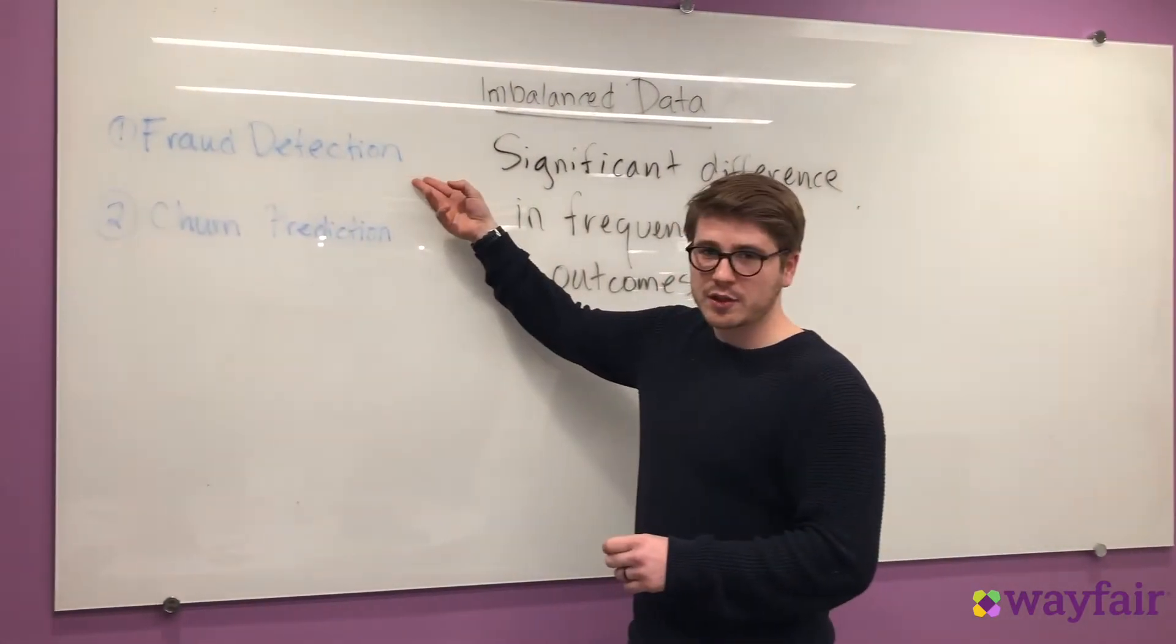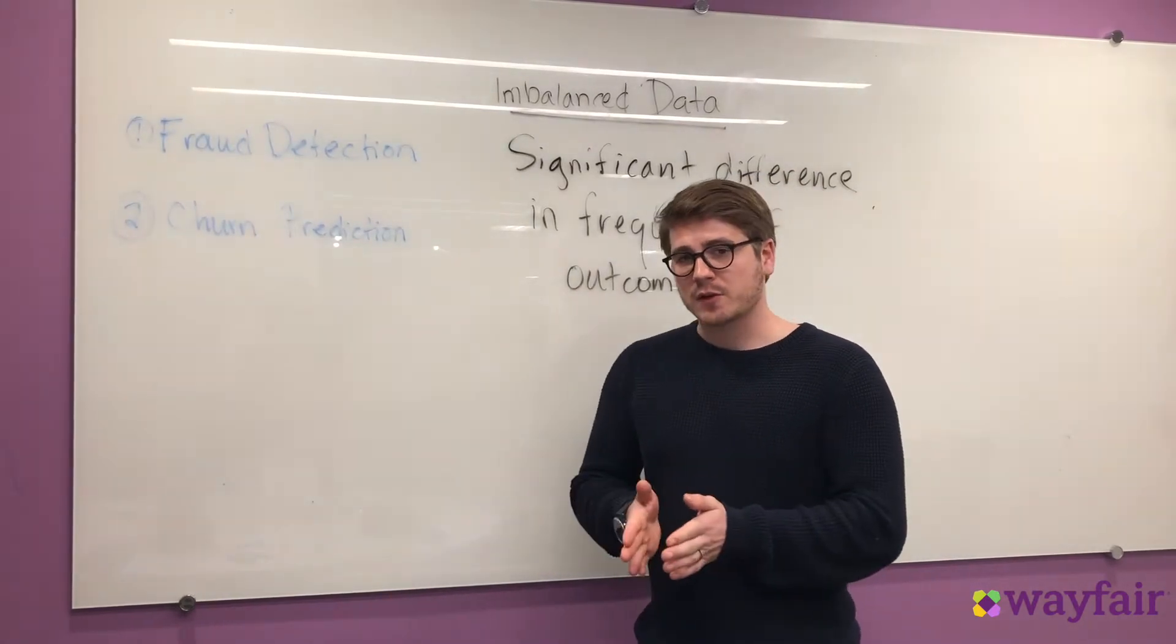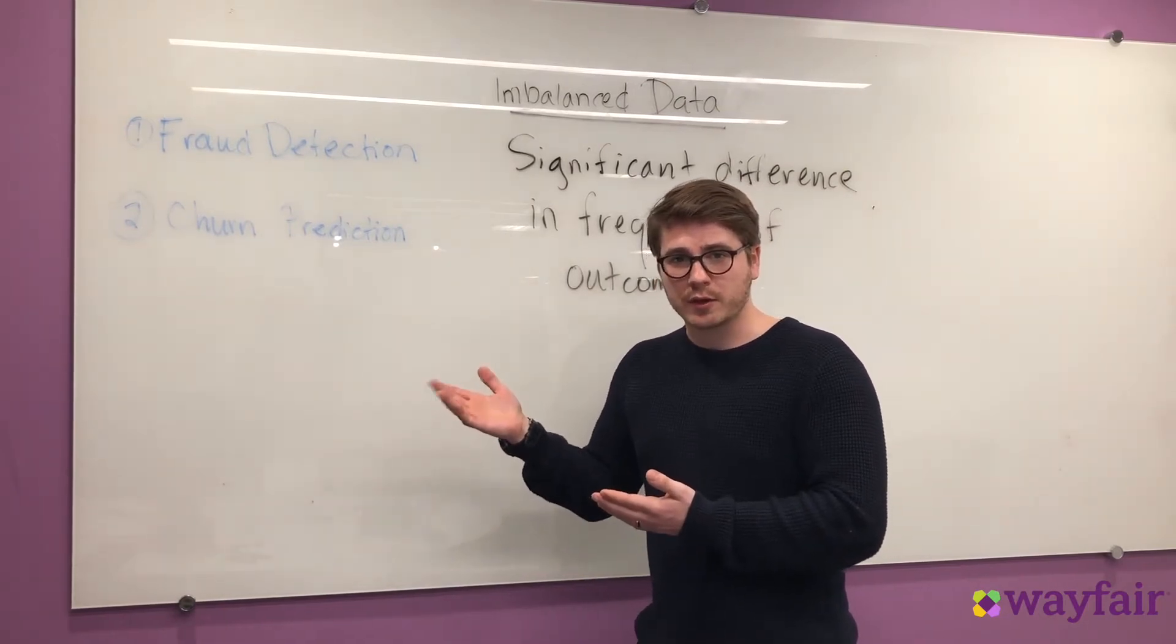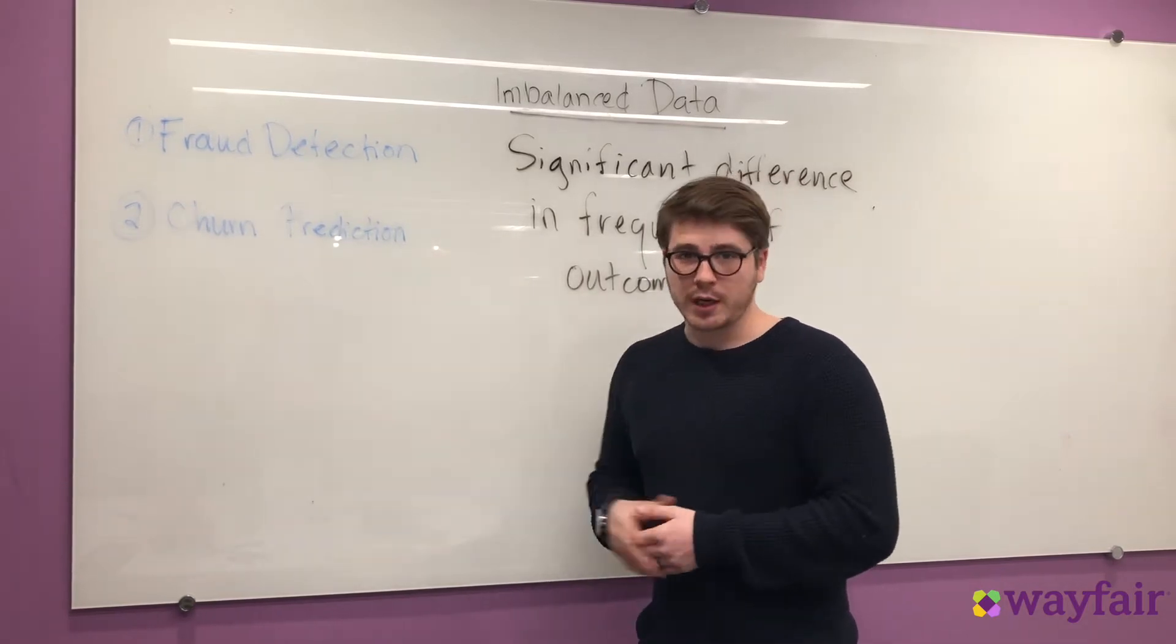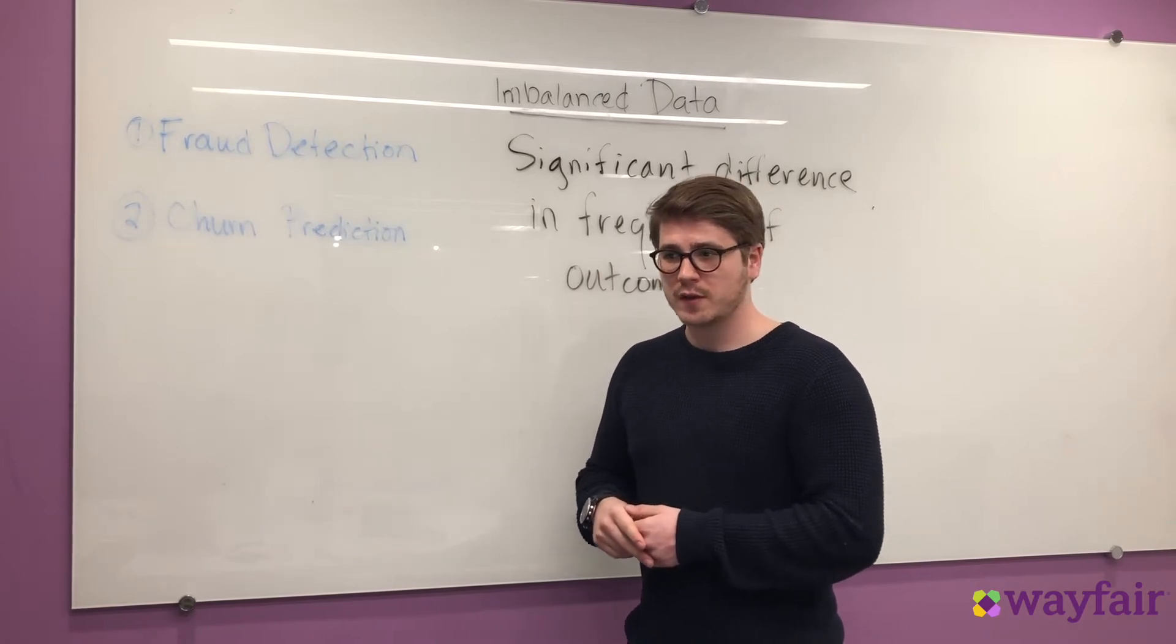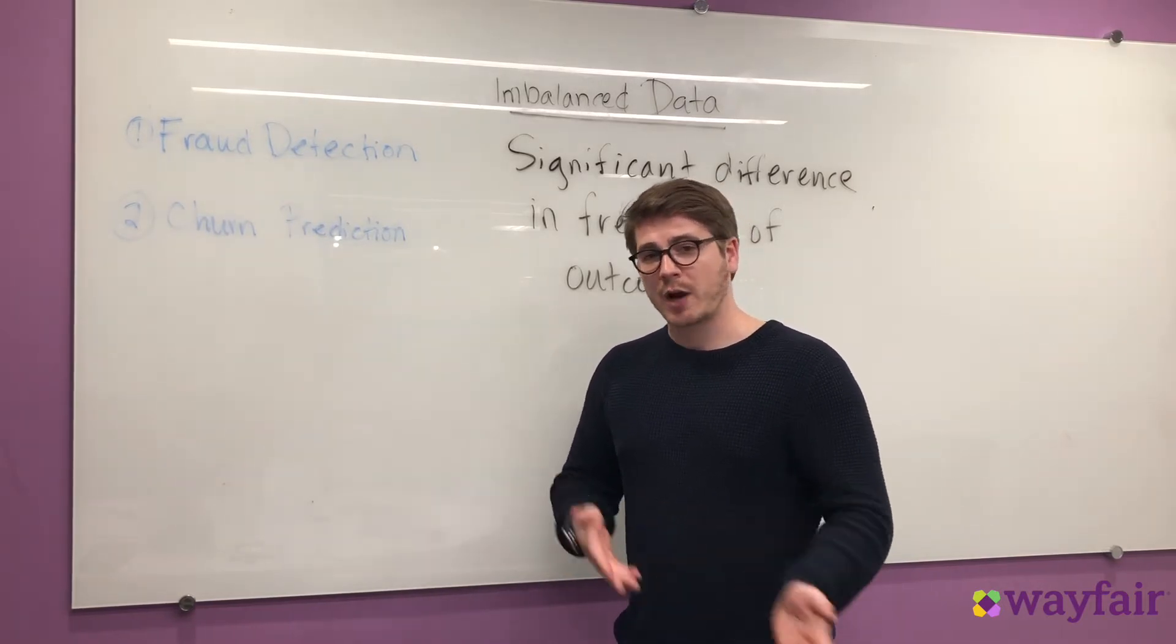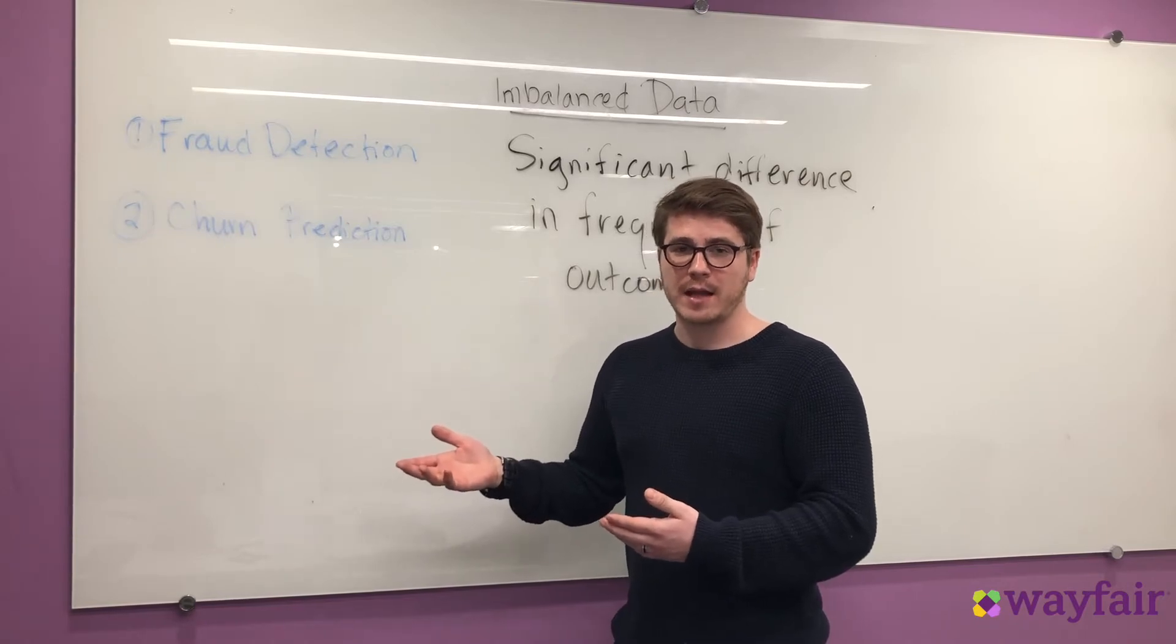The first of which is fraud detection. Most orders are non-fraudulent and a very small subset are fraudulent, but those are very important. So obviously we need to predict fraudulent orders, but we still have imbalanced data. Another example is churn prediction. When you're predicting a customer's unsubscription from a service, customers not doing anything, which means not unsubscribing, is far more common than a customer actually unsubscribing. So this is another example of handling imbalanced data.